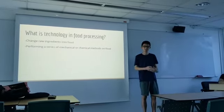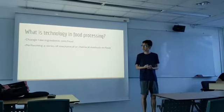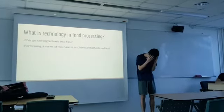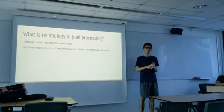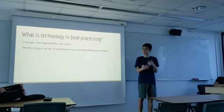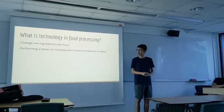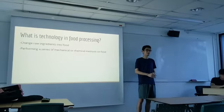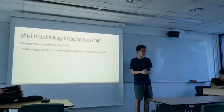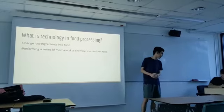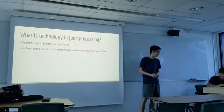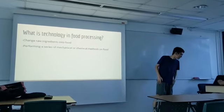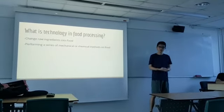So what is technology in food processing? Technology in food processing is changing raw ingredients into food through machinery or natural technology. You can use machines to change the food from ingredients into the actual food. Food processing also performs a series of mechanical, chemical, and microbiological methods and techniques to change raw ingredients into food. It combines raw ingredients into the marketable foods that we see on the shelves.